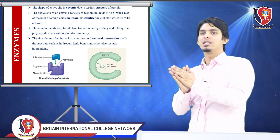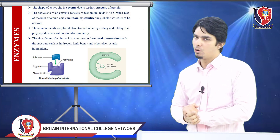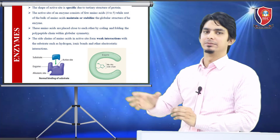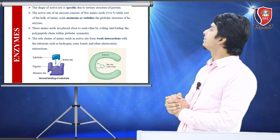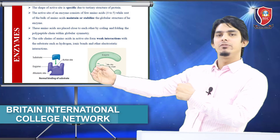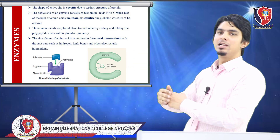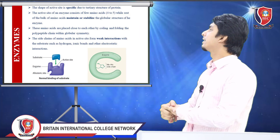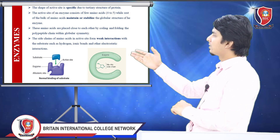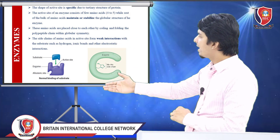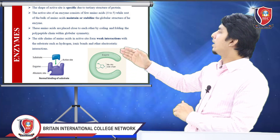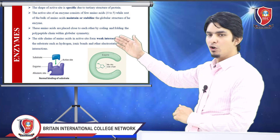The enzyme's catalytic activity is only active at its active site. Amino acid chains form weak linkages with substrate molecules — these include hydrogen bonds, ionic bonds, and other electrostatic interactions. In the enzyme diagram you can see the active site, the allosteric site, and where substrate molecules bind. Amino acids such as histidine and methionine can be seen at the active site.